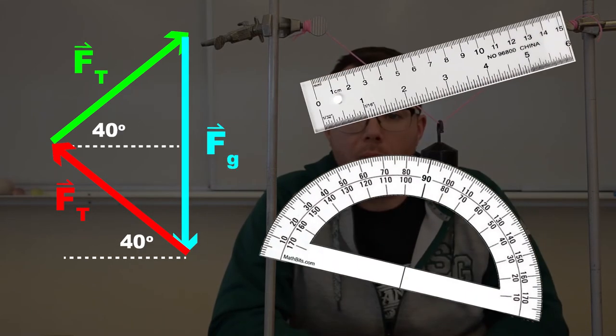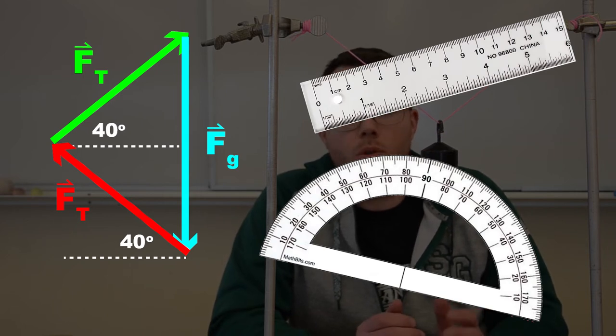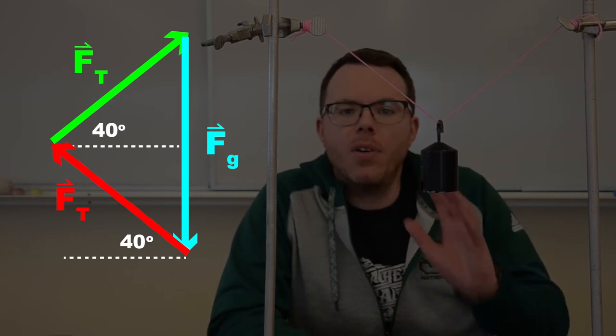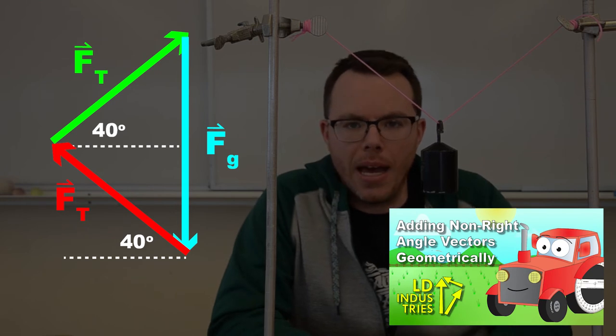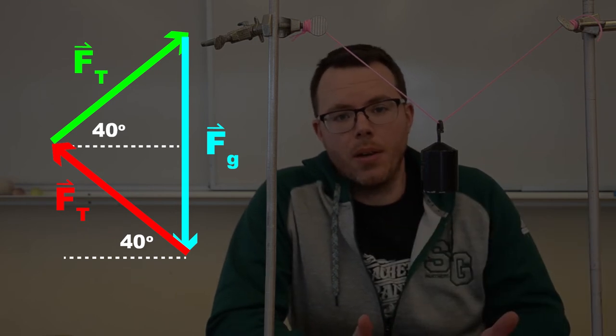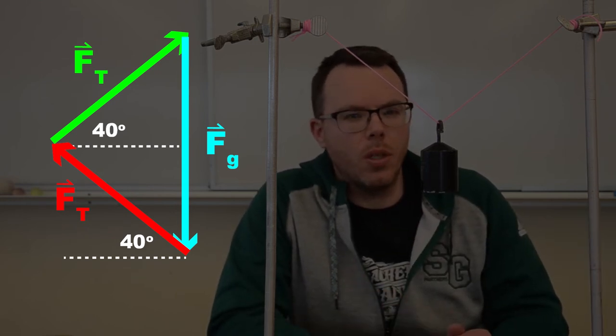If you've got a ruler and protractor, you can make that diagram and solve that vector addition really easily just through graphical analysis. I've got a video showing you how to do that. If you don't feel like busting out the ruler and protractor, there's another way you can do it as well.